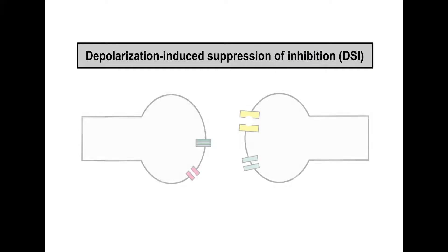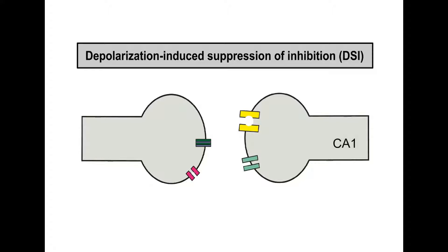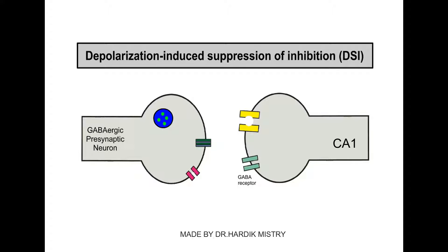Depolarization induced suppression of inhibition. CA1 post-synaptic terminals also have synapses with GABAergic presynaptic neurons. That presynaptic terminal has GABA-filled vesicles. Here, GABA is an inhibitory neurotransmitter.